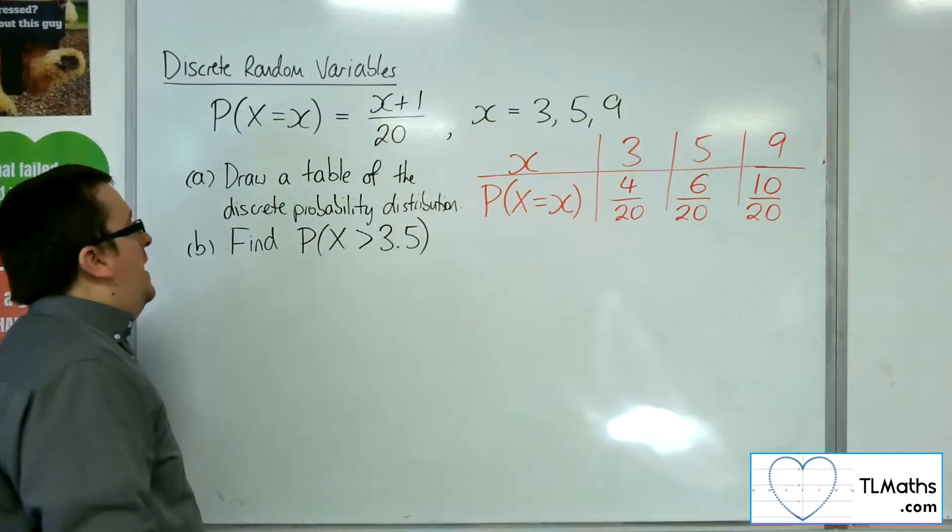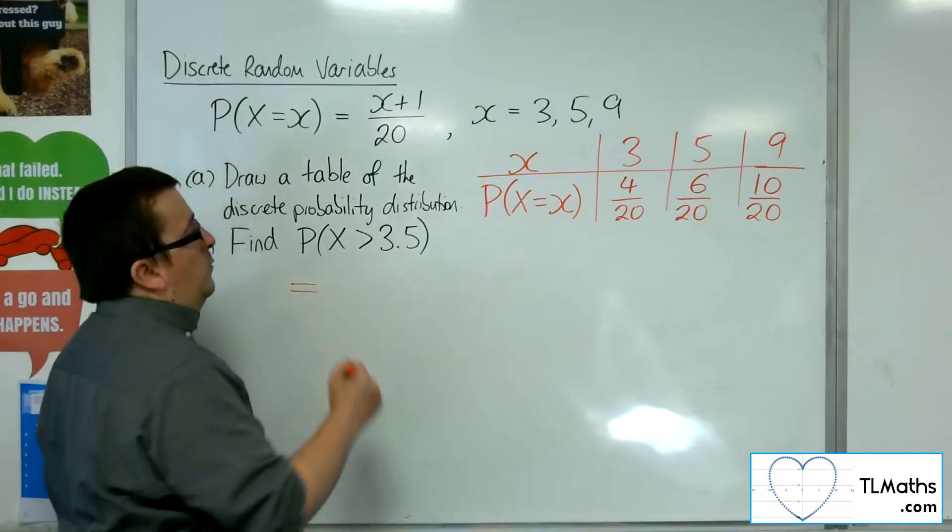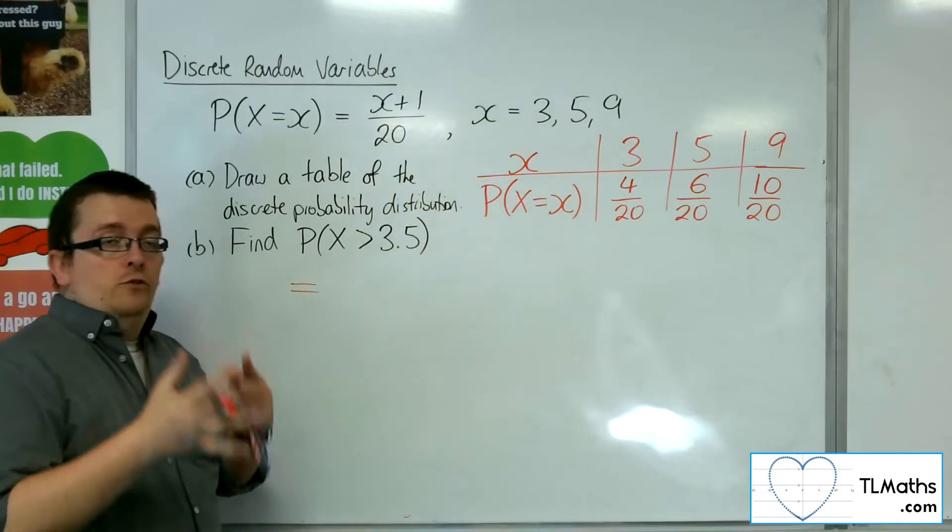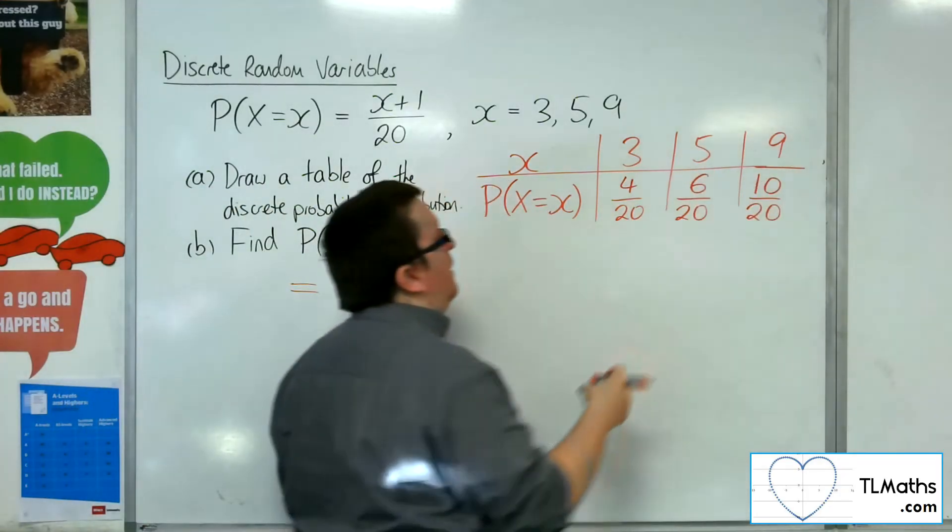Okay, so then if I was asked to find the probability of x being greater than 3.5, x cannot take on 3.5. So the values that are greater than 3.5 are 5 and 9.